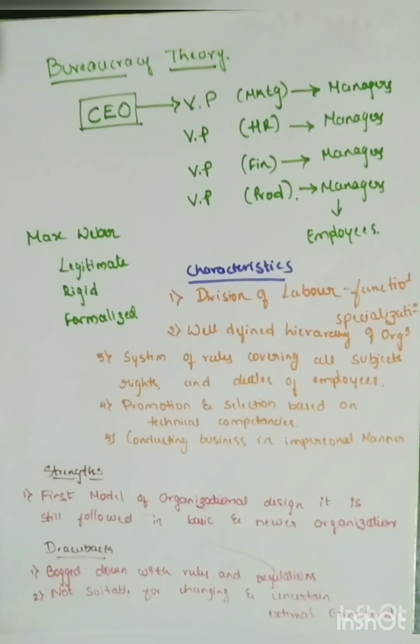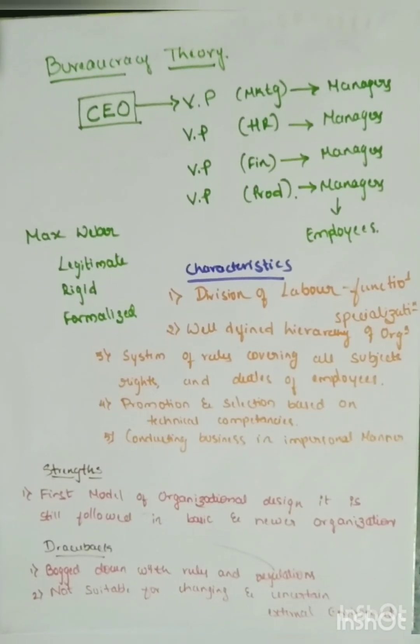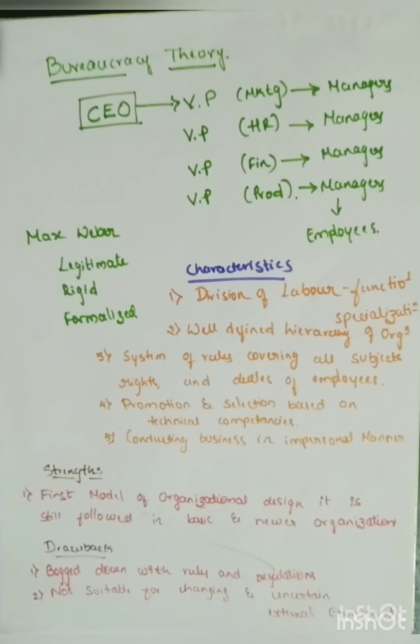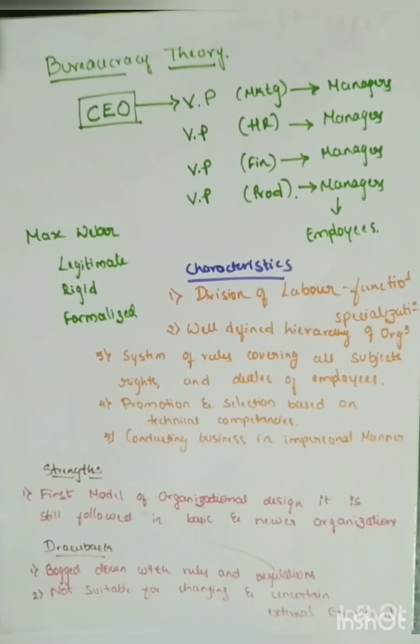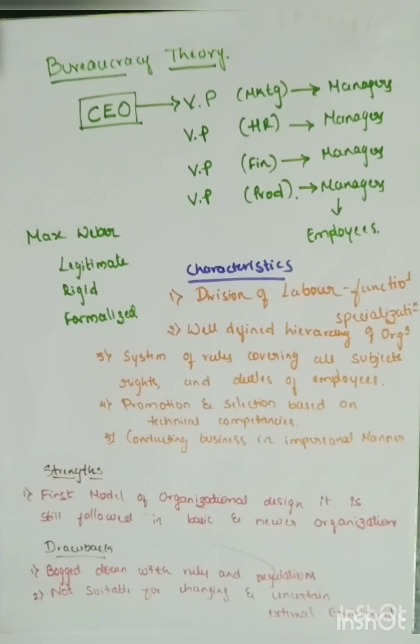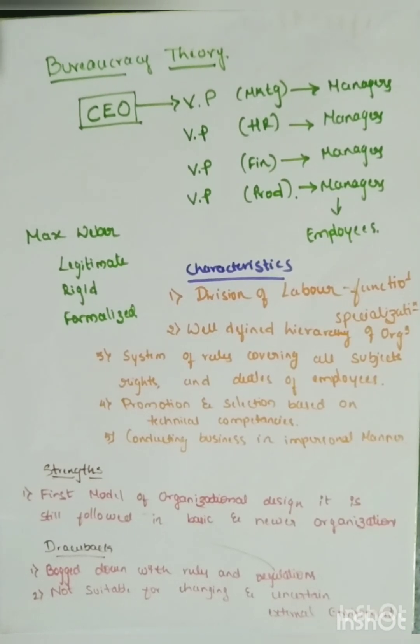The second drawback is that this theory is not at all suitable for changing and uncertain external environments. To give an example, when COVID came, organizations were having too many troubles and facing too many problems and issues. At that time, following bureaucracy theory was a bit difficult because bureaucracy theory explains that there is an authoritative and formalized environment.